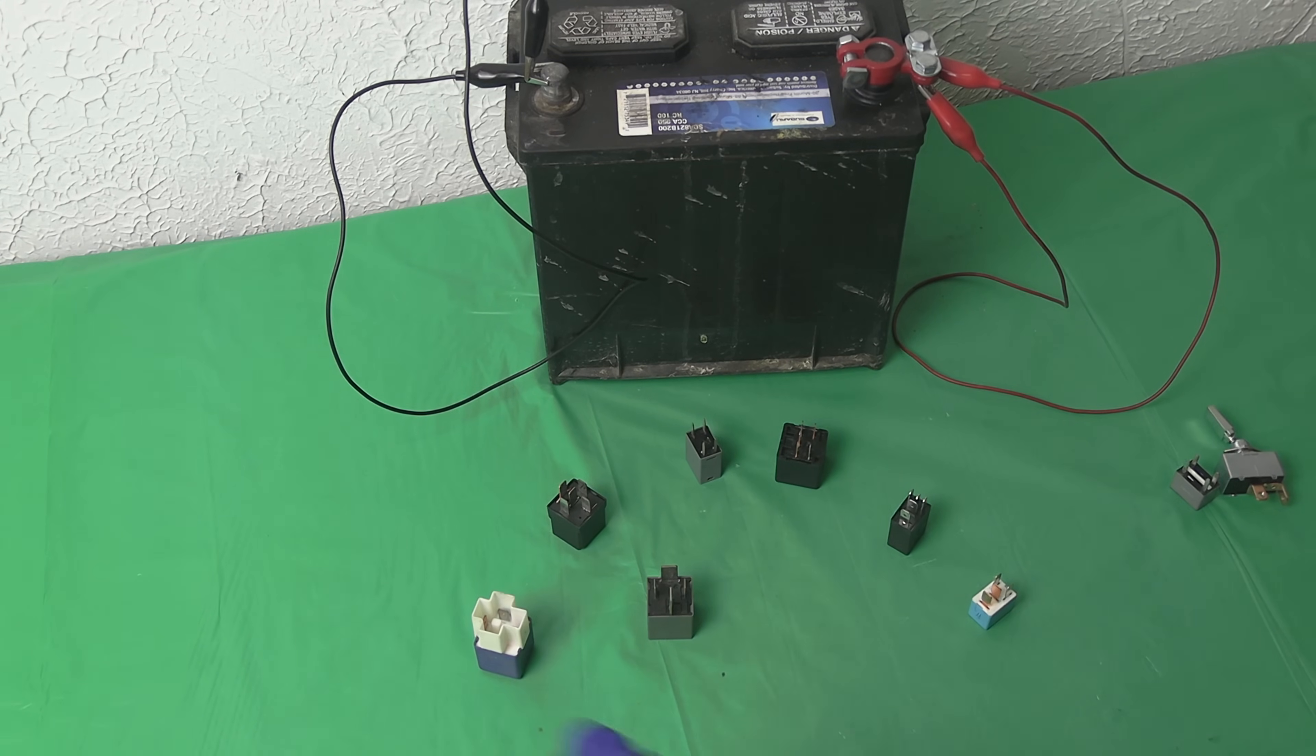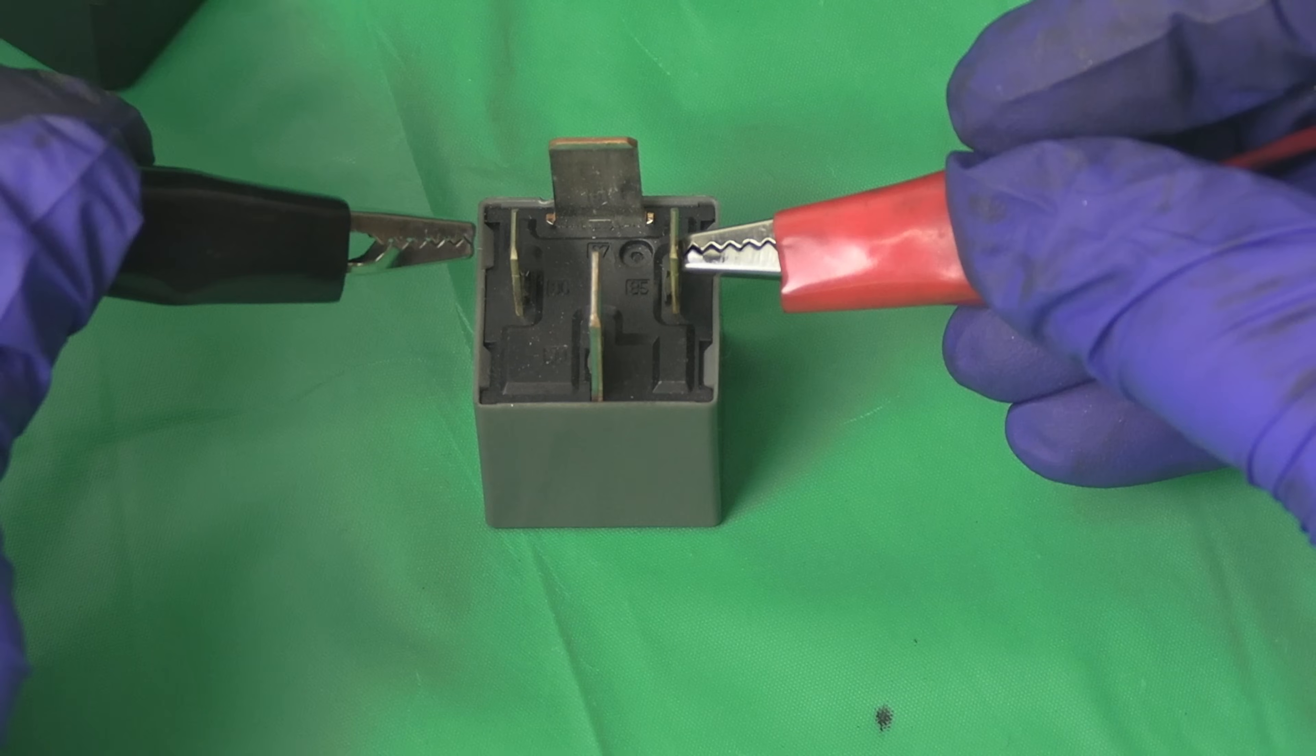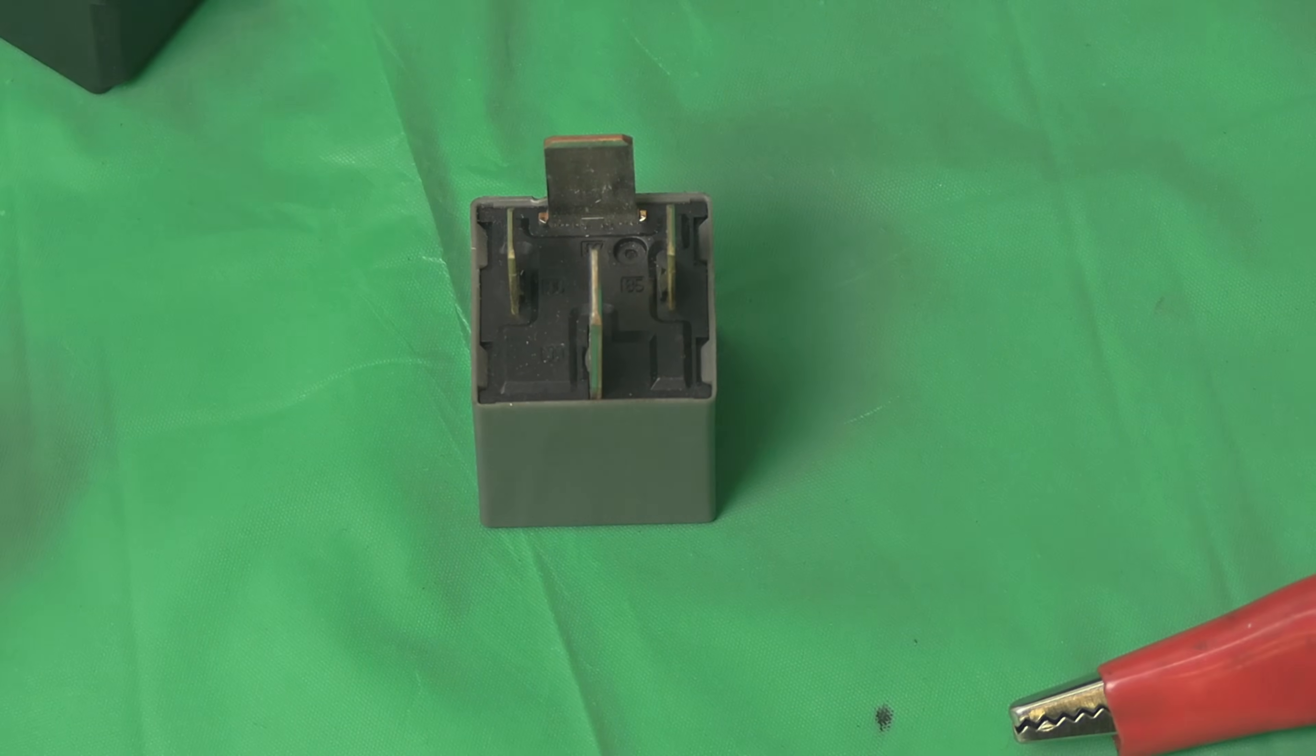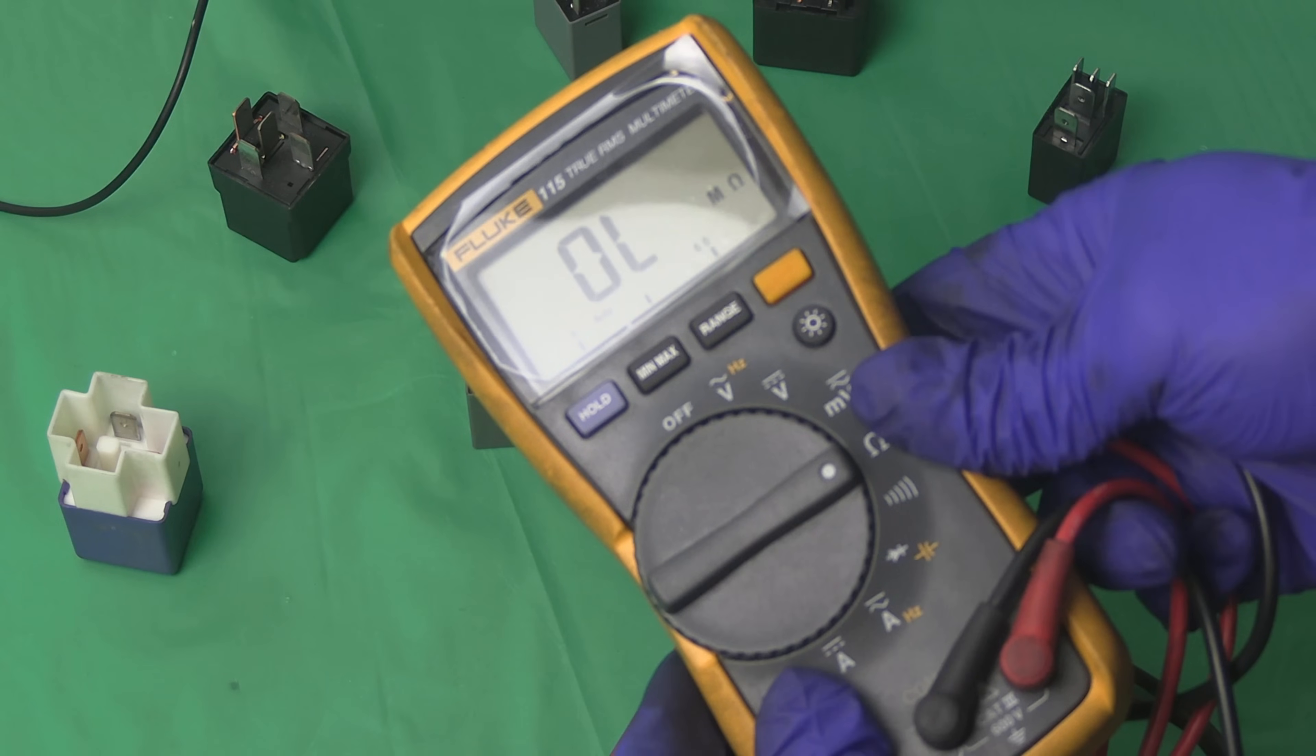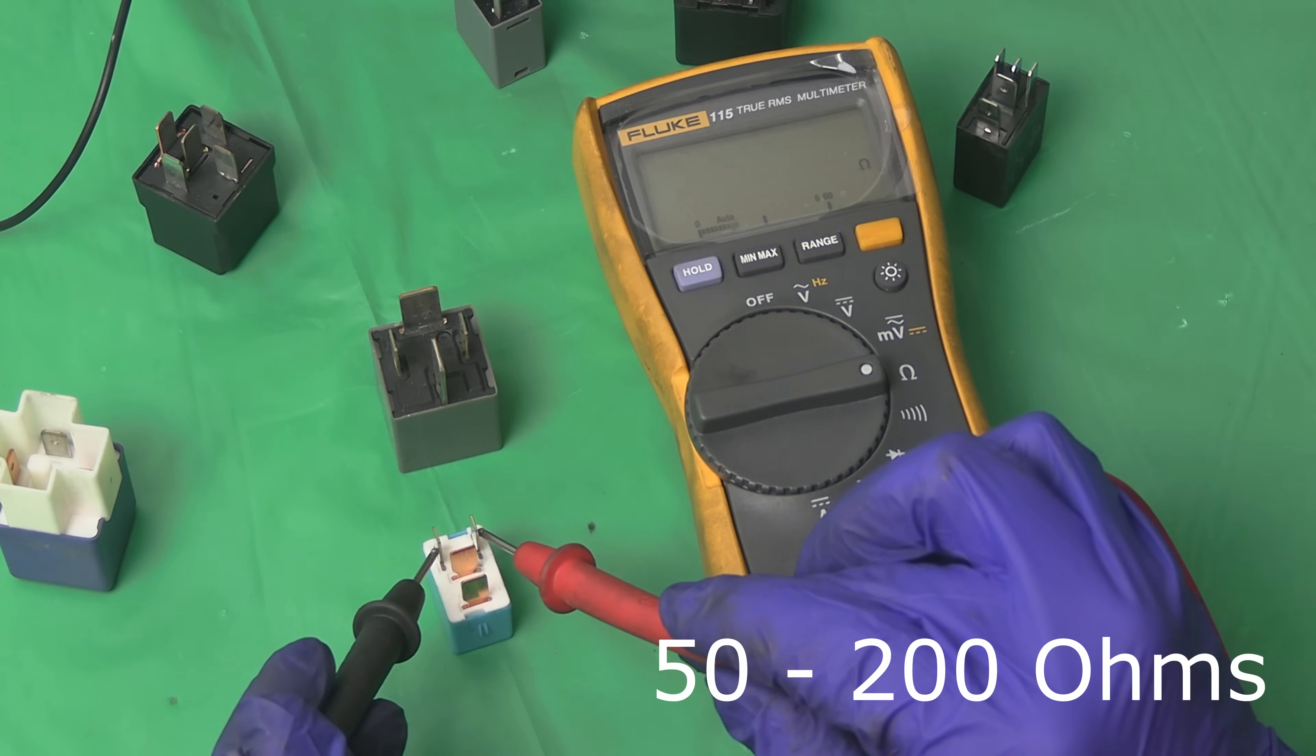So if you're suspecting a bad relay, first thing you can do is perform a click test. Run a couple wires from the battery to the control circuit pins 85 and 86 and see if the relay clicks. Polarity usually doesn't matter. It should click either way. If you don't hear it click, chances are your relay is bad. You can try to confirm that by checking the resistance between these pins. A good working relay will show resistance somewhere between 50 and 200 ohms.